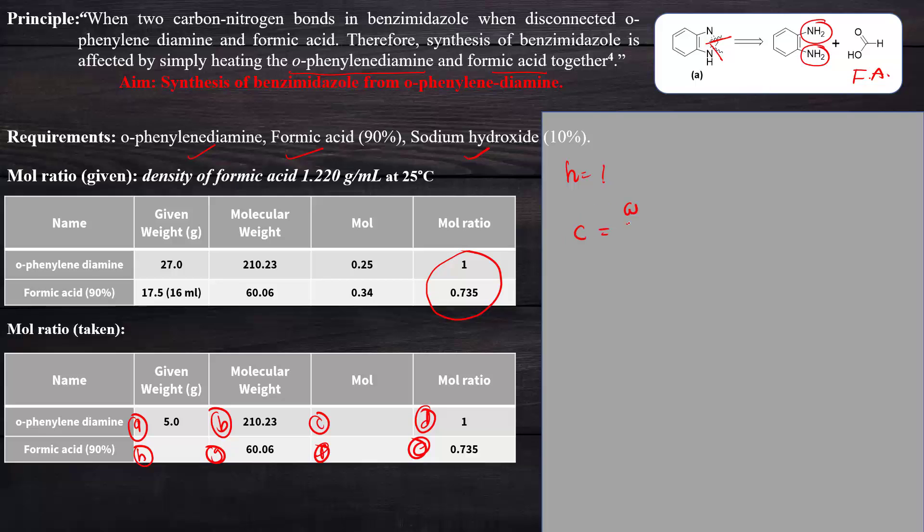First we get C. C equals weight by molecular weight. So it's equal to 5 divided by 210.23 and we will get 0.023 moles. When we multiply this 0.023 with the mole ratio of formic acid 0.0735, then we will get 0.017 moles of formic acid. The moles of formic acid gives the weight of formic acid after multiplication with the molecular weight. When the molecular weight is multiplied with the moles of formic acid we will get the gram weight of formic acid that is 1.04 grams. When we divide with the density 1.220 we will get 0.86 ml. So 0.86 ml formic acid is required to prepare benzimidazole from 5 grams of diphenylenediamine.